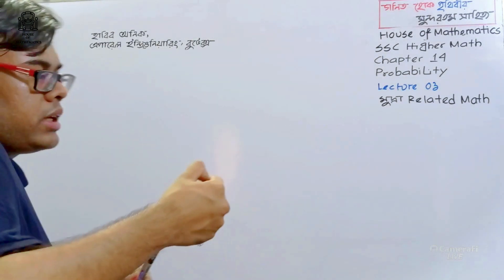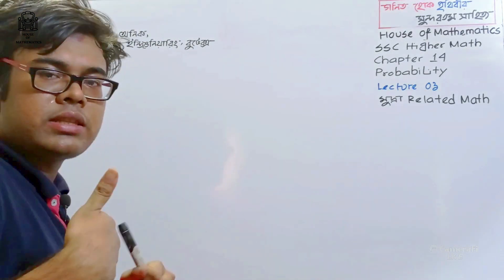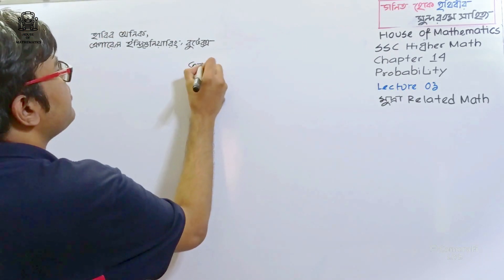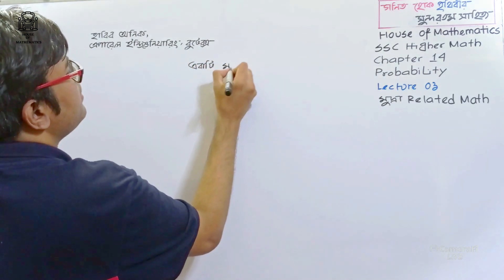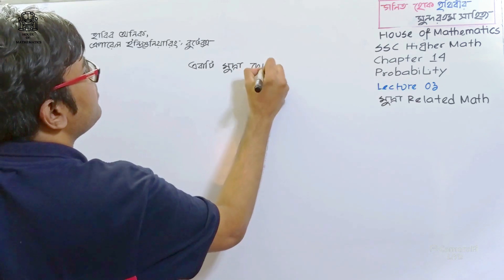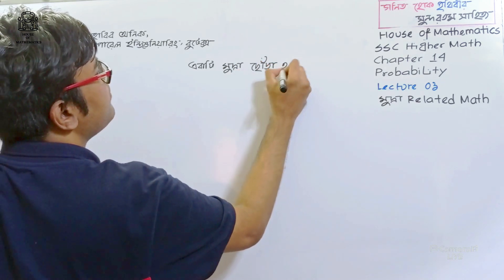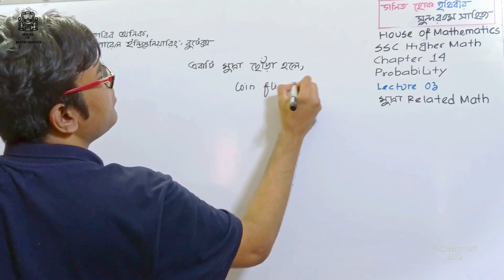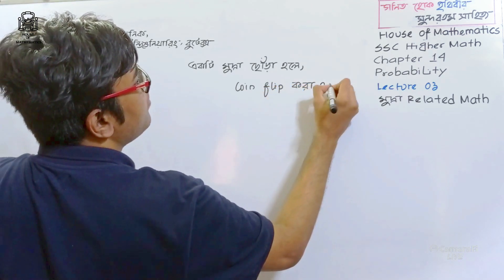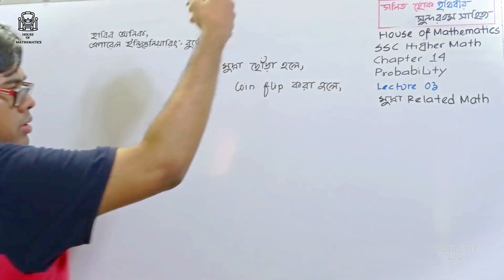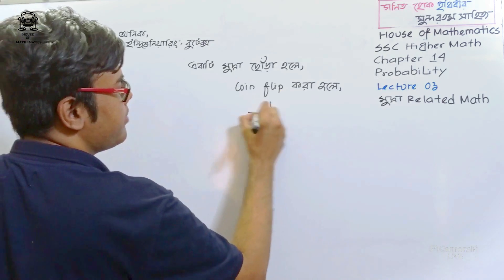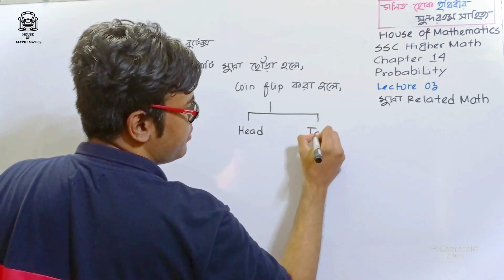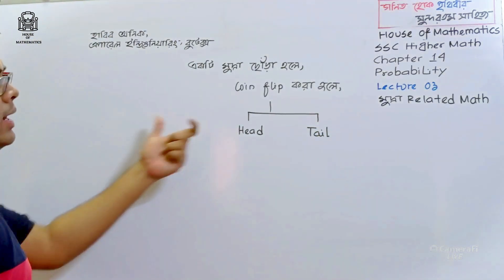I'm going to look at the mathematical problems of a coin flip. We're going to flip it. This is the coin that we can flip and look at the two points — either head or tail.